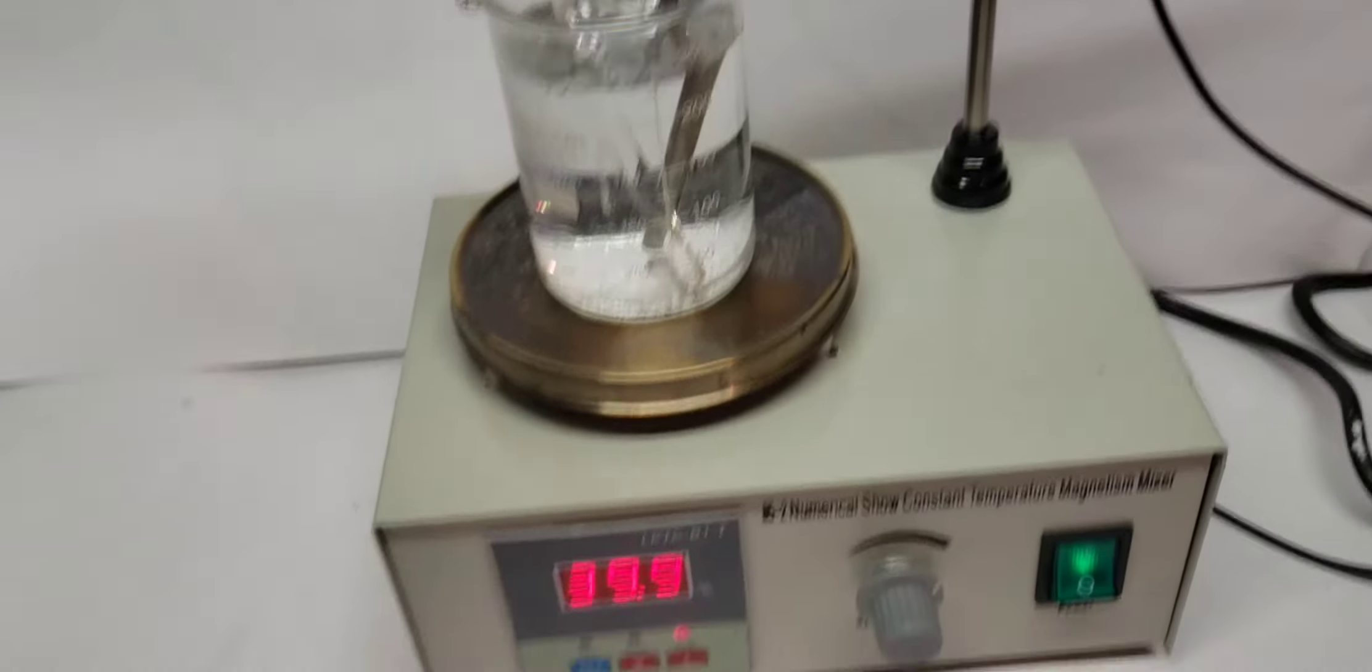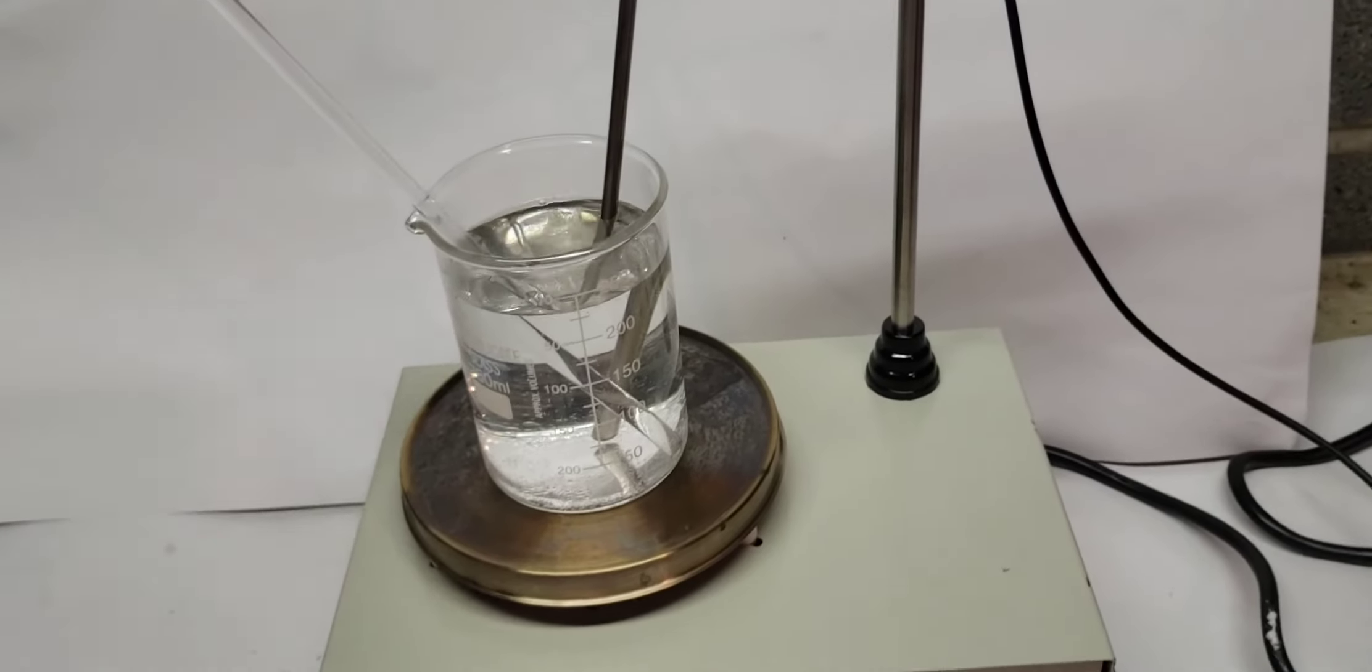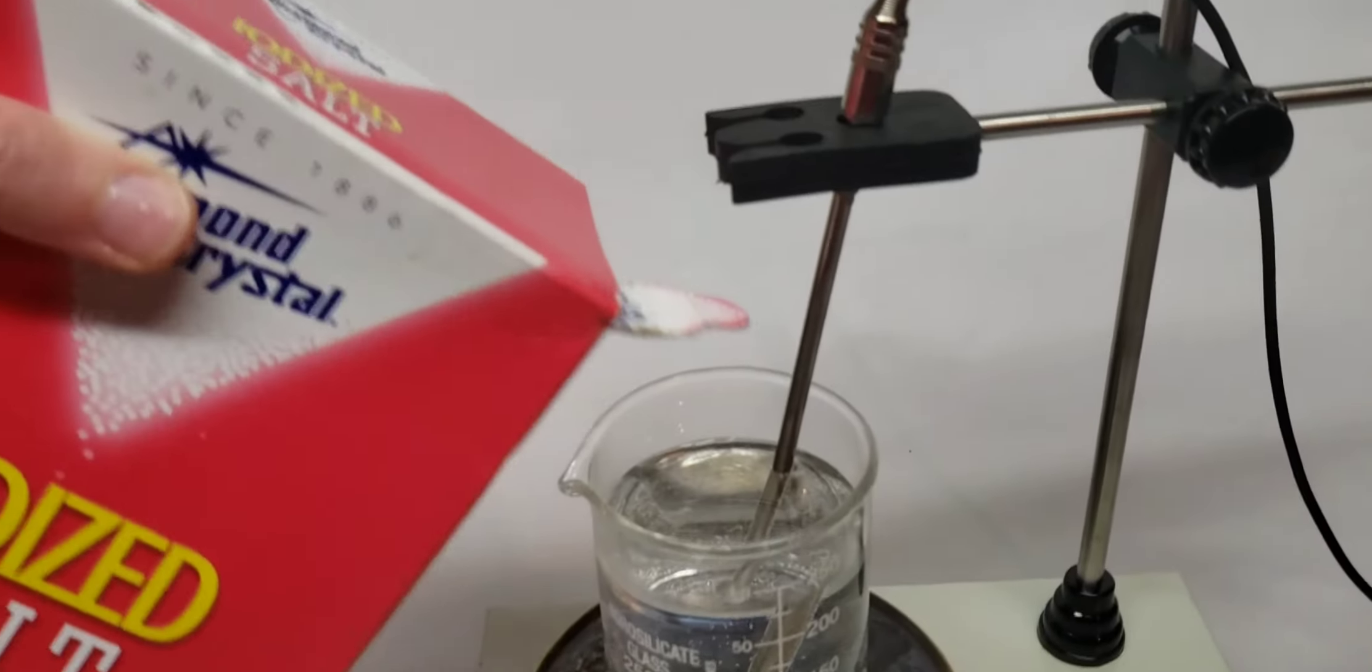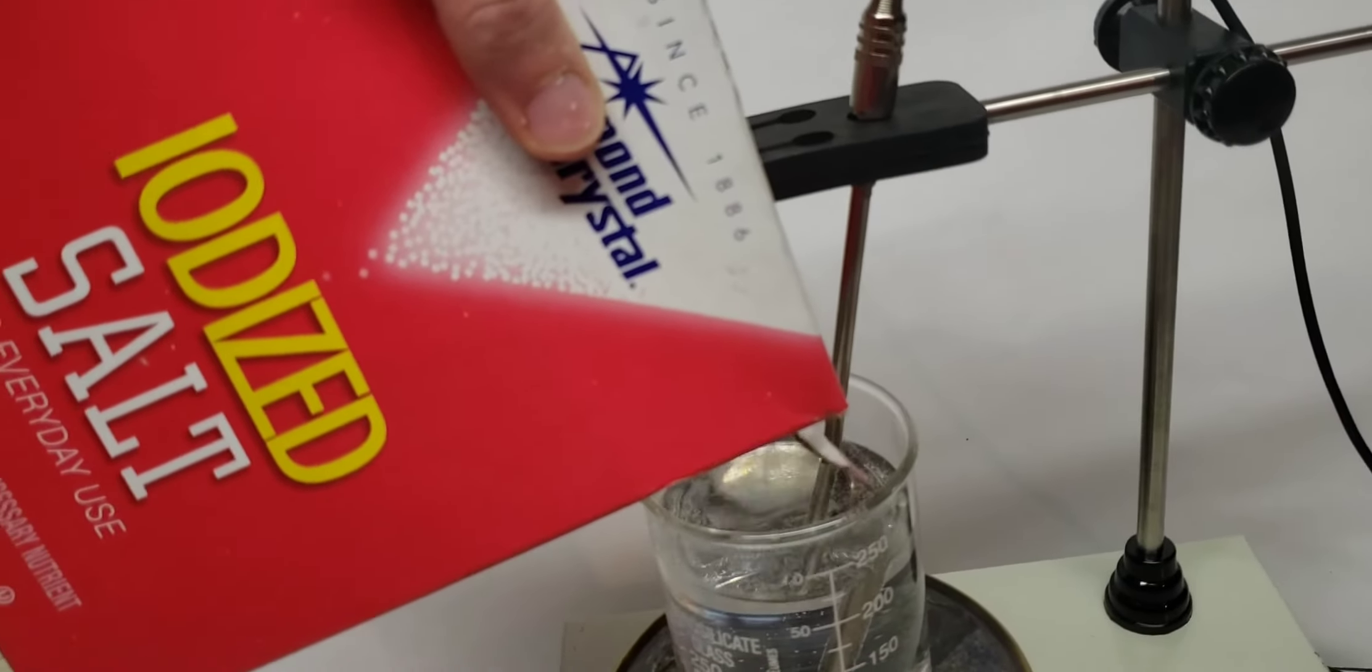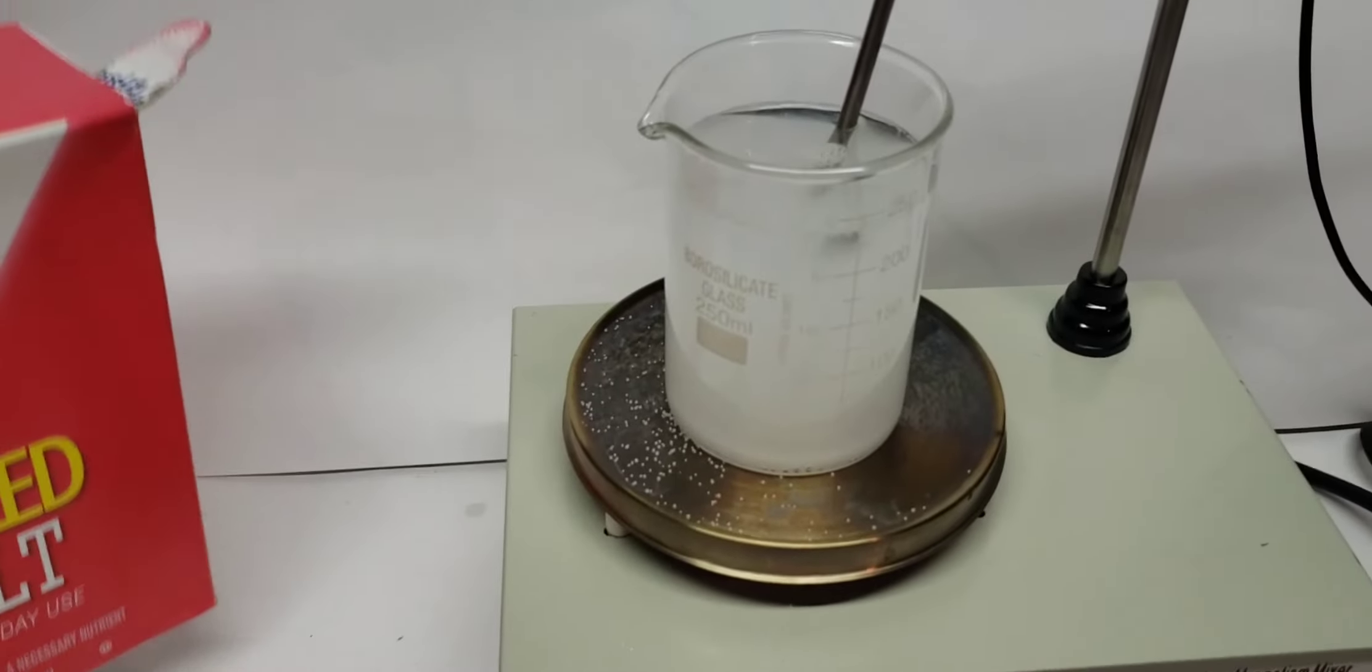So you can start by just heating up some water to around boiling. I used a stirrer hot plate for this, but you really don't have to. Any source of heat should work fine. And next I add in some table salt. The amount is pretty arbitrary. You can just keep adding it in small amounts until when you stir it, it doesn't dissolve anymore.